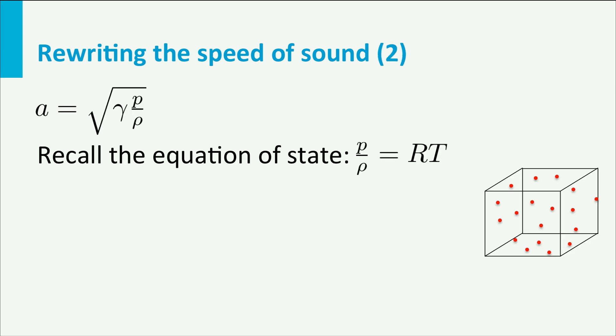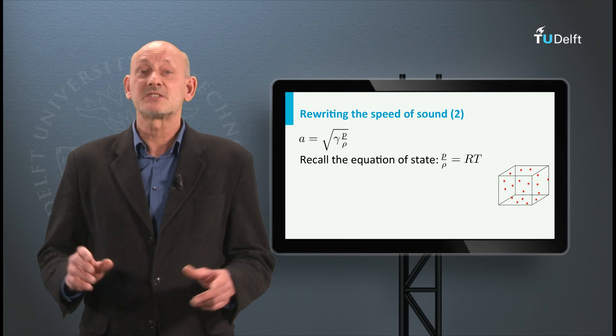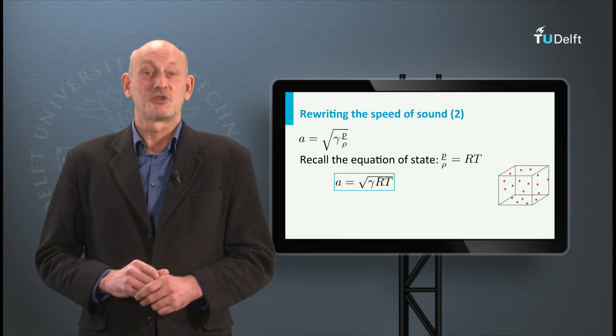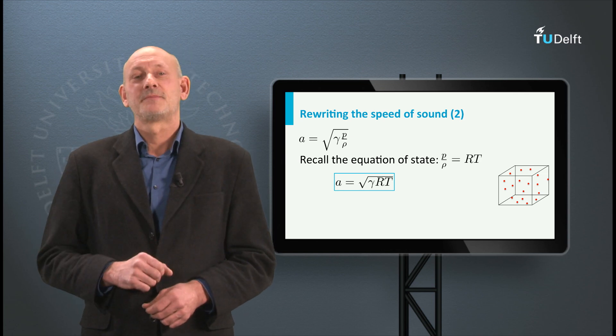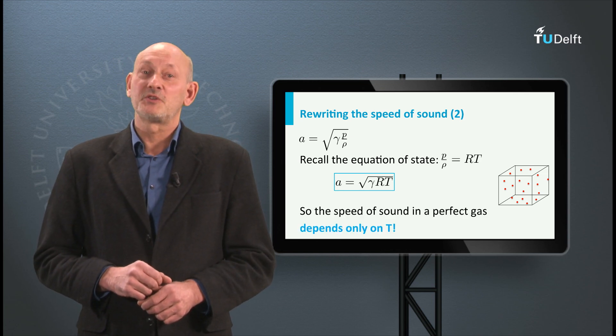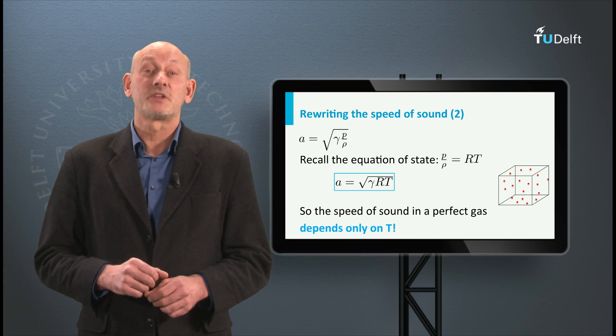We also have the equation of state of a perfect gas, p over rho is RT. Hence for the speed of sound we find the speed of sound A is the square root of gamma RT. And this is a nice result. It shows that the speed of sound in a perfect gas only depends on the temperature T.